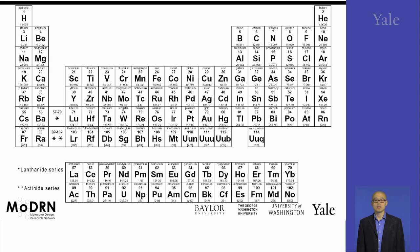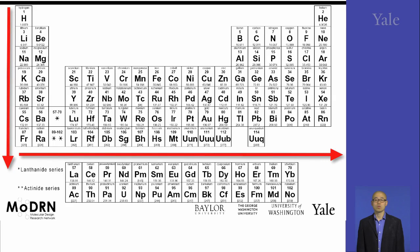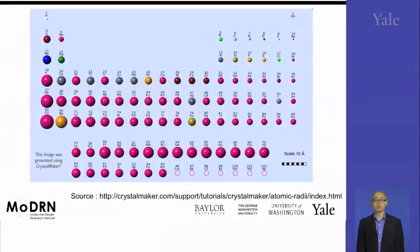There is a tendency of physical property change across columns and across rows. For example, a very fundamental property for elements is their atomic radii. As shown here, as you go across a period from left to right, the atomic radii are decreasing.